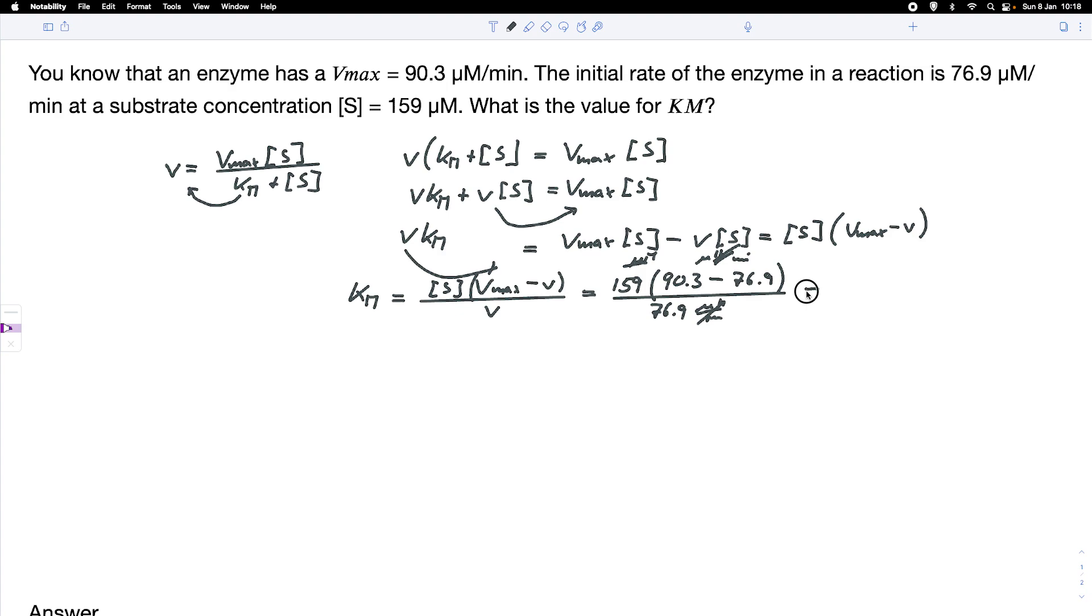And if we put this into a calculator, we would get a Km of roughly 27 point, with a little bit of rounding, 27.7 micromolar. So that would be our Km for this particular reaction, when we have these parameters Vmax 90.3 and the initial rate at this particular substrate concentration.